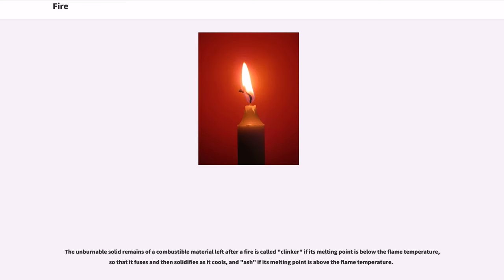The unburnable solid remains of a combustible material left after a fire is called clinker if its melting point is below the flame temperature, so that it fuses and then solidifies as it cools, and ash if its melting point is above the flame temperature.